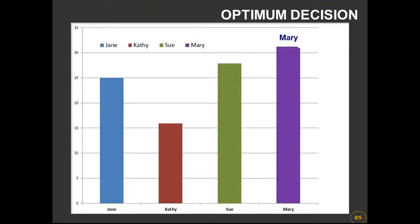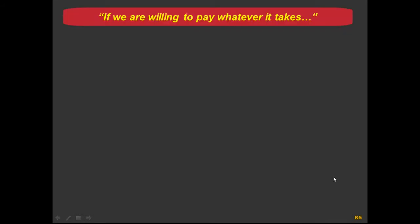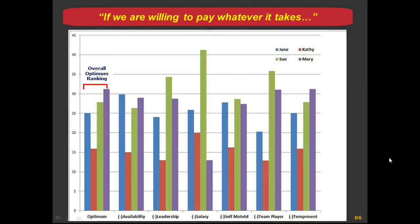We can now look at the sensitivity analysis. Once we complete the process, we see a graph indicating that Mary is the preferred choice. I go to my boss and present this data, and he says: 'If we're willing to pay whatever it takes, is Mary still your choice?' I scratch my head, not knowing how to respond — but with this software, all we have to do is press one button.